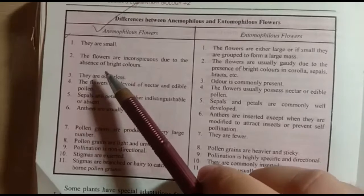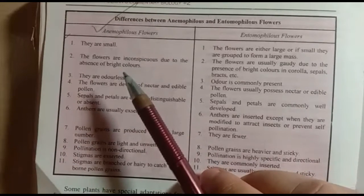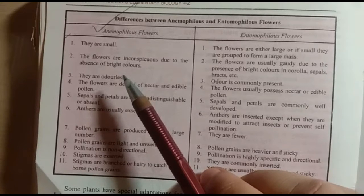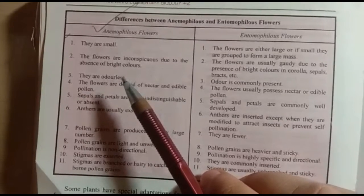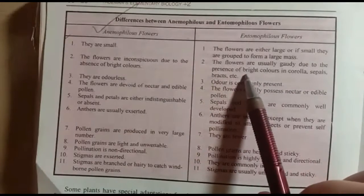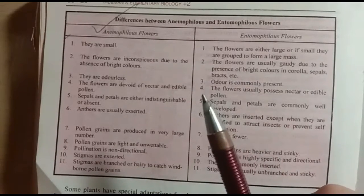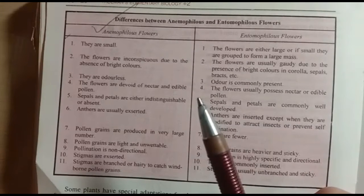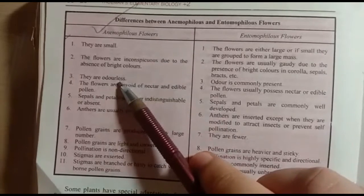The second point: anemophilous flowers are inconspicuous due to the absence of bright colors. In contrast, entomophilous flowers are usually gaudy due to the presence of bright colors in corolla, sepals, bracts, etc.